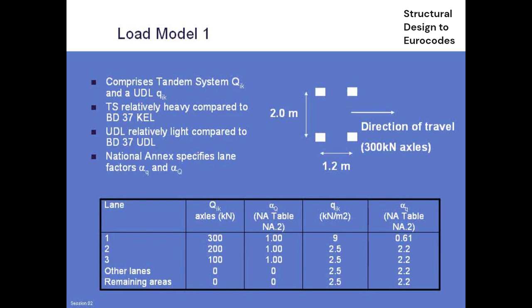In the UK national annex, lane factors (alpha_Q for the tandem system, alpha_q for the UDL) have been selected. For the tandem system, all lane factors are 1 — essentially accepting the Eurocode values as is. For the UDL, the values look odd: 0.61 in lane 1, and 2.2 in lanes 2 and beyond. The reason is that multiplying these by the UDL gives 0.61 × 9 = 5.5 kN/m² in lane 1, and 2.2 × 2.5 = 5.5 kN/m² in lane 2. So the UK national annex transforms the UDL into a uniform patch load across the adverse area — much simpler to apply.